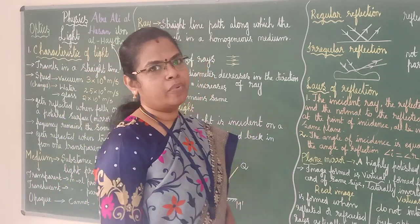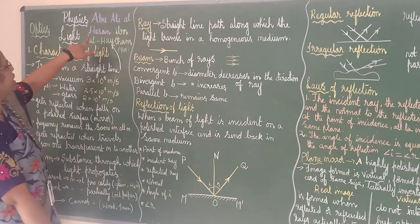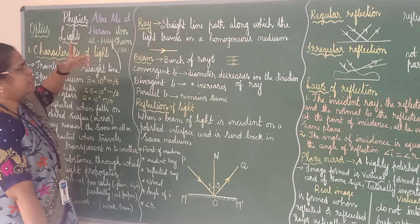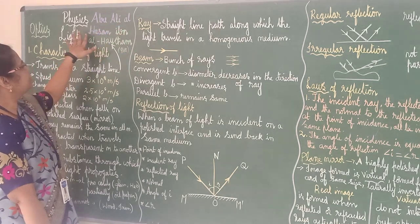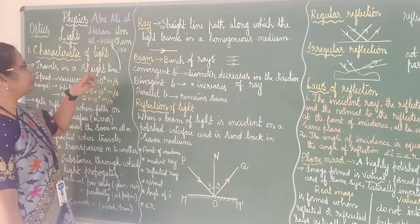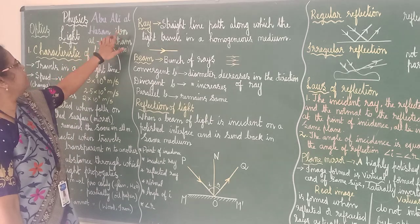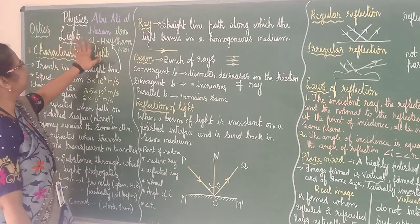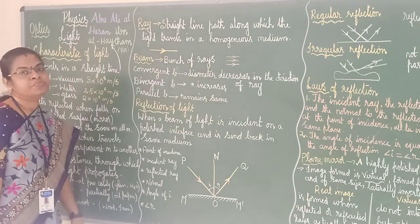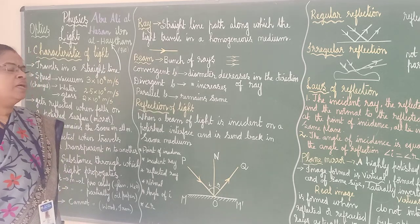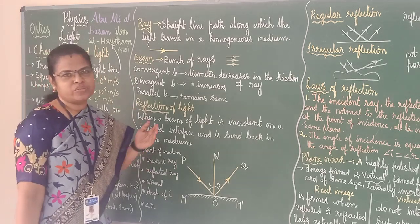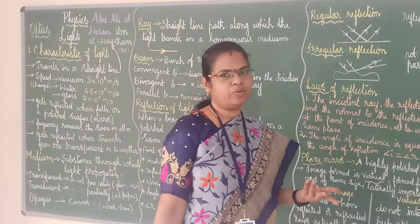The father of modern optics is a Muslim scholar from Iraq — Abu Ali Ibn al-Haytham. Some people used to call him as Ibn al-Haytham. He is the father of modern optics. He was born in 965. You can search for other details — it will be very interesting.